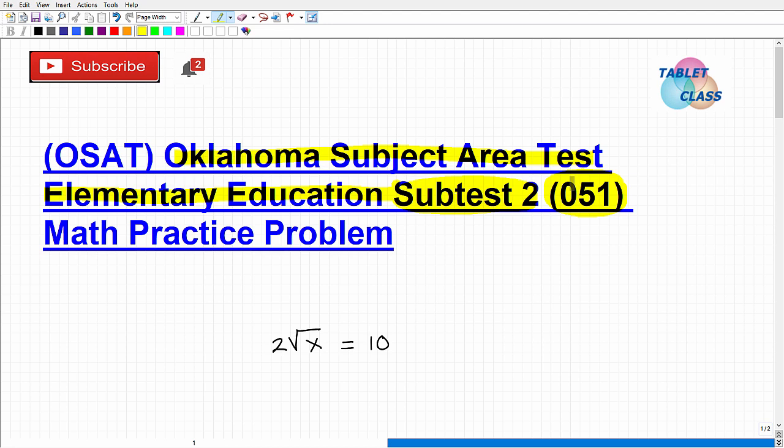A very specific topic we're going to be discussing in this brief video. If you're watching this video, I assume you are preparing to be an elementary education teacher in Oklahoma, and obviously you are required or been told you have to take this test. We're going to be talking about subtest 2, which is the code 051.